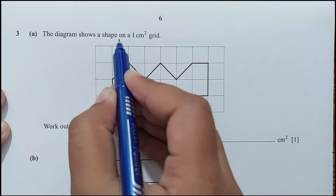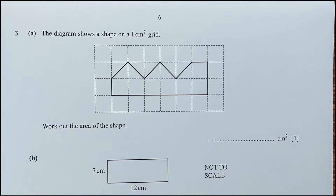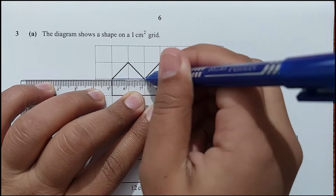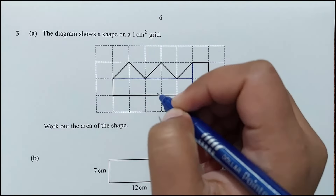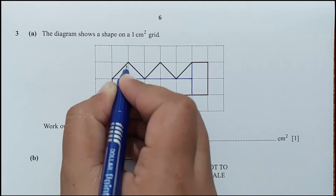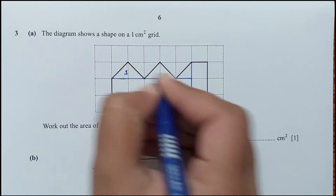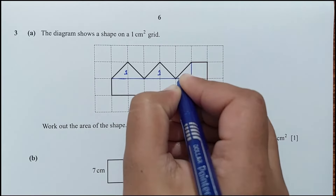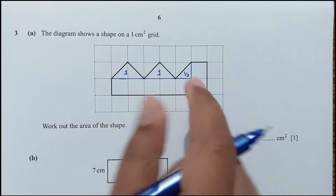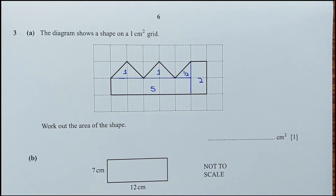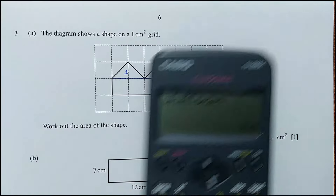Question 3, part A. Work out the area of the shape on the 1 cm square grid. The shape is broken into triangles and rectangles. Triangle: half × 2 × 1 = 1. Another triangle: half × 1 × 1 = 0.5. Rectangle: 5 × 1 = 5. Rectangle: 2 × 1 = 2. Total area = 1 + 1 + 0.5 + 2 + 5 = 9.5 cm².